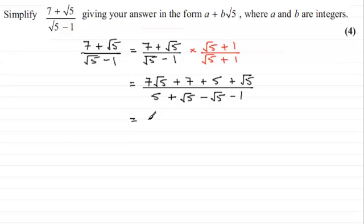Tidying this up: 7 + 5 = 12, and 7√5 + √5 = 8√5, so we have (12 + 8√5)/4. The √5 terms canceled in the denominator, leaving 5 - 1 = 4.